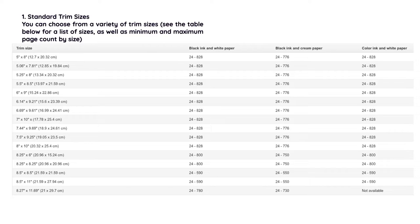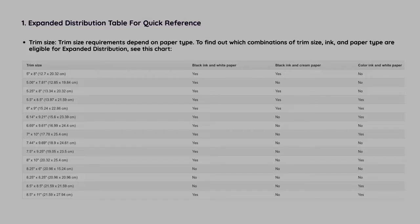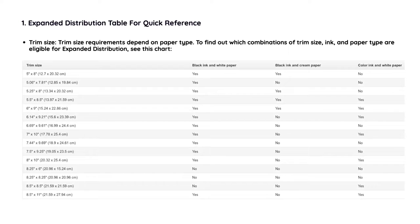For color ink the page count is about the same, though I'm not sure why — ask KDP. Keep those things in mind when designing your book and spine. In the expanded distribution quick reference table for trim sizes, you'll see that in some cases expanded distribution is available and in some cases it isn't. For example, a 5x8 book with color ink on white paper is not available for expanded distribution.